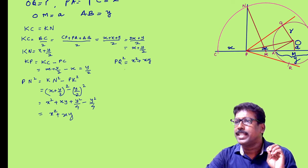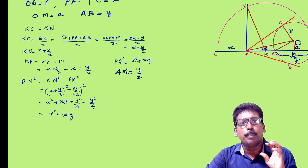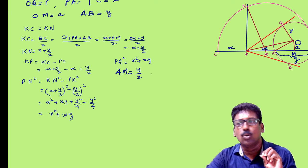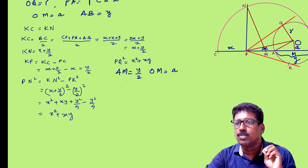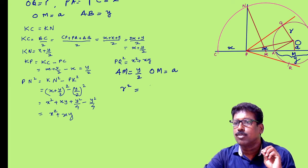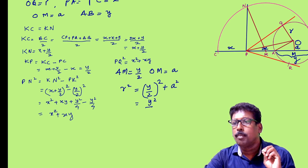Now you can see a right-angled triangle AMO. Here AM = Y/2, because a perpendicular from the center bisects the chord. You took AB as Y, so AM = Y/2. Now AO² = AO, that is R² = AM² + OM², which is (Y/2)² + A² = Y²/4 + A².